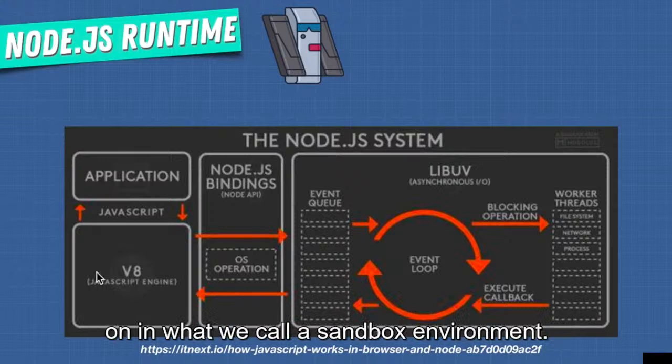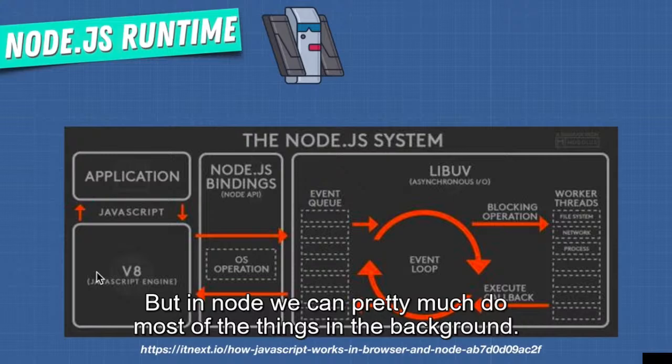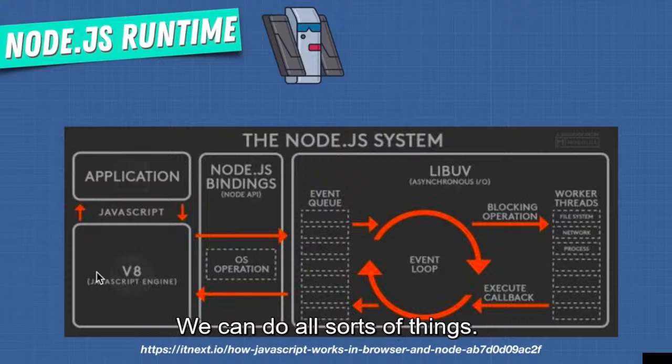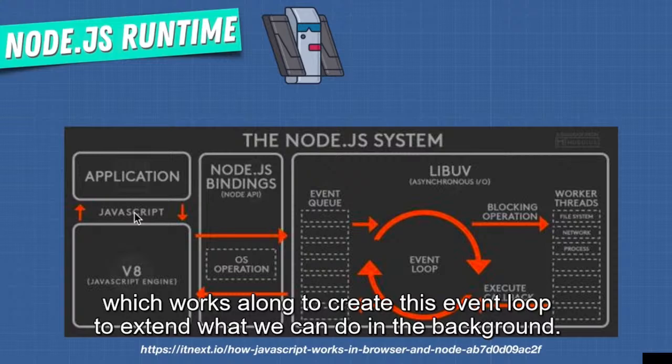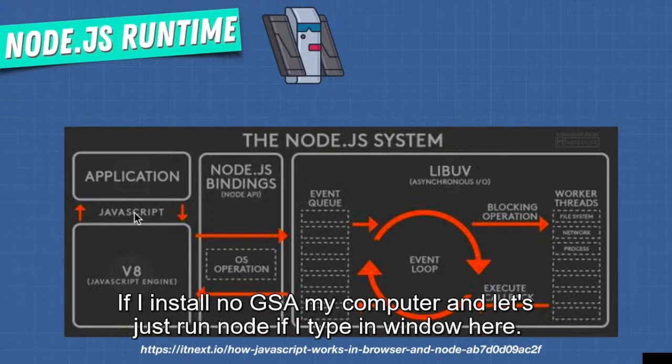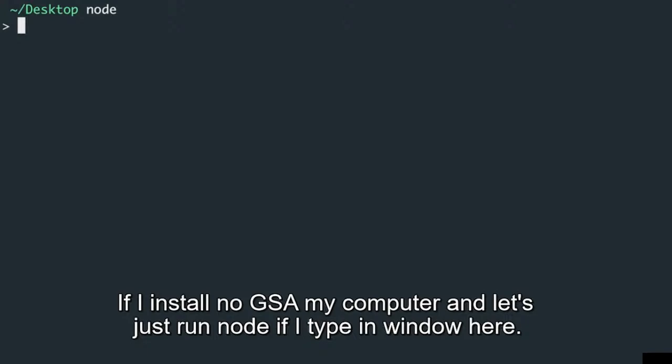The browser just runs on the tab we're currently on, in what we call a sandboxed environment. But in Node we can pretty much do most things in the background — we can access file systems and all sorts of things. Node.js uses the Google V8 engine to understand JavaScript. If I install Node.js and run Node, and type in 'window', well, I get an error.